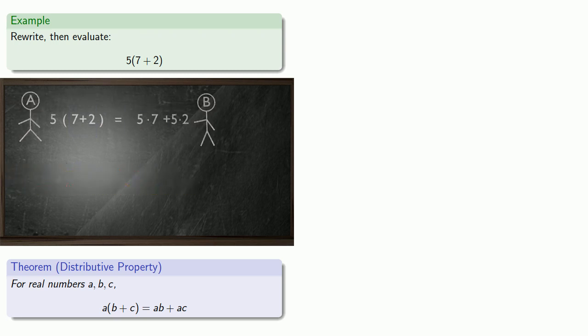And so we can do five times seven, and five times two, and then add to get our final answer.